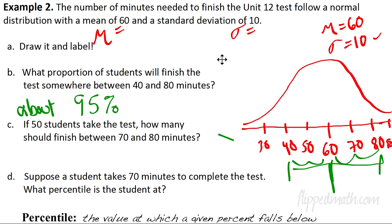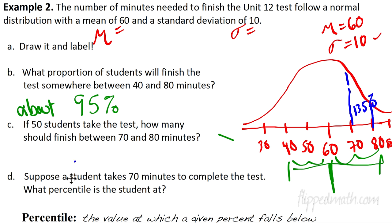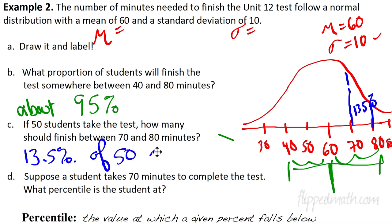Part C: If 50 students take the test, how many should finish between 70 and 80? That little piece between 70 and 80 is 13.5% of the curve, as we figured out above. So we need 13.5% of 50, which is approximately 6.25 students — so about 6 students. You have to round correctly.